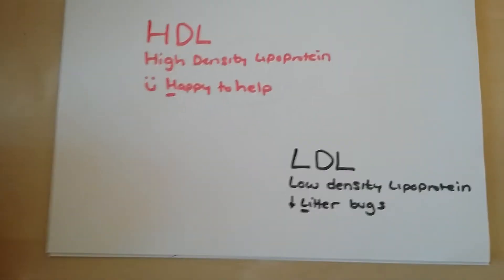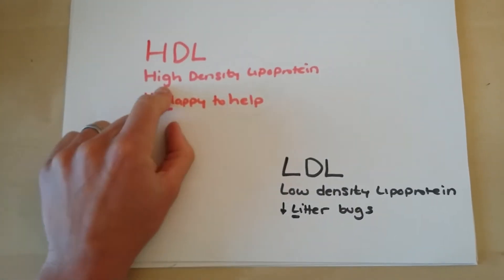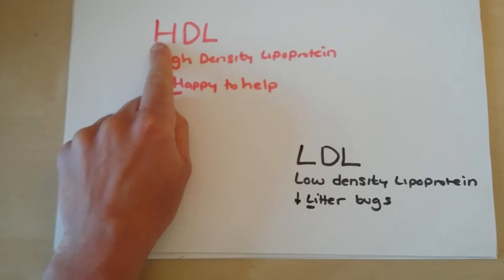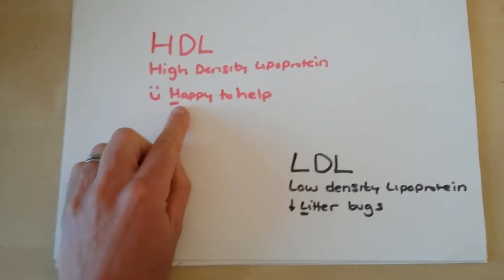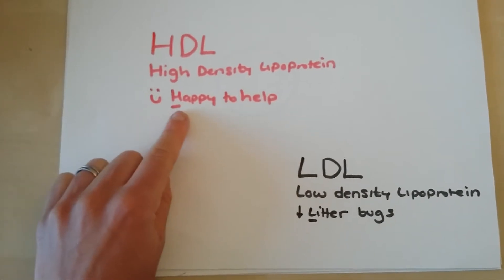So the way to think about this, a nice easy way to remember the difference is that H for HDL stands for high density lipoproteins, and then you can use that same H just to remember that they are happy to help. So these are the good ones in inverted commas, they're happy to help.